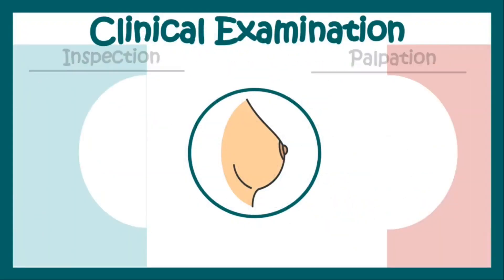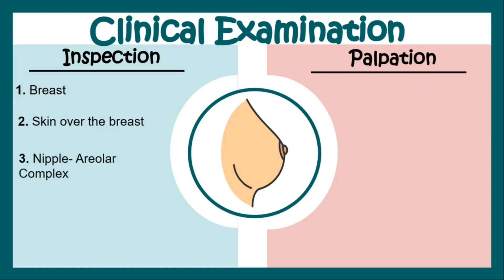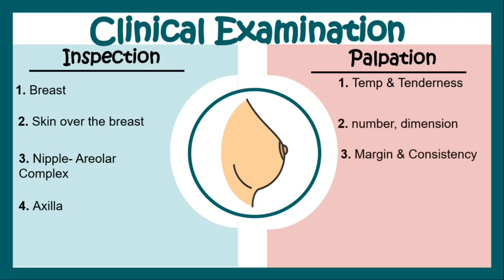Then the doctor performs a clinical examination, which includes inspection — that is looking at the breast — and palpation — that is feeling the breast with the hand. During inspection, the doctor inspects the breast, the skin over the breast, the nipple areola complex (the pigmented area around the nipple), and the axilla, that is the underarms. In palpation, the doctor feels for temperature and any tenderness, looks at the number and dimension of any lumps, the margin and consistency of the lumps — whether the lump is soft, hard, or firm — and the fixity of the lump to the skin or the underlying muscles of the chest.